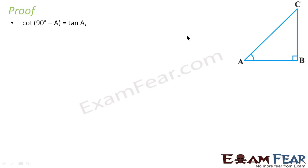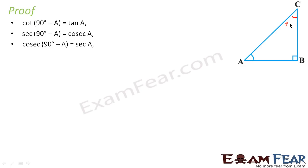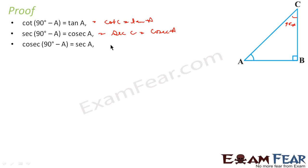Three more proofs are left: cot(90° − A) = tan A, sec(90° − A) = cosec A, and cosec(90° − A) = sec A. Since angle C = 90° − A, we need to prove: cot C = tan A, sec C = cosec A, and cosec C = sec A.